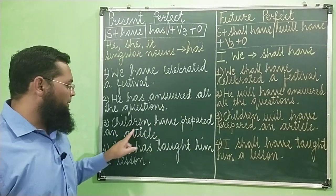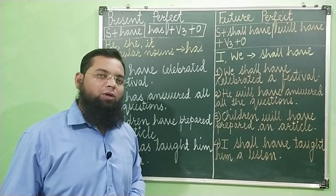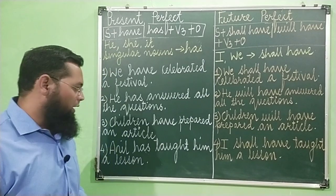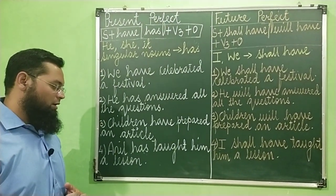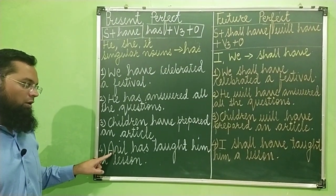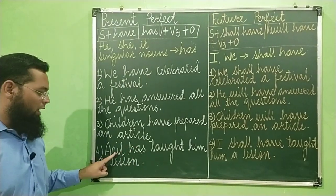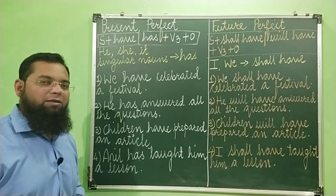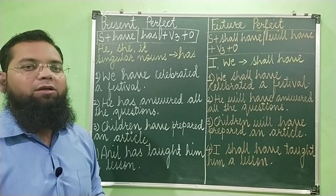Children have prepared an article. Anil is a proper noun and with proper nouns in present perfect tense we use 'has'. Anil has taught him a lesson. Anil usay ek lesson sikha chuka hai. The work has been completed.